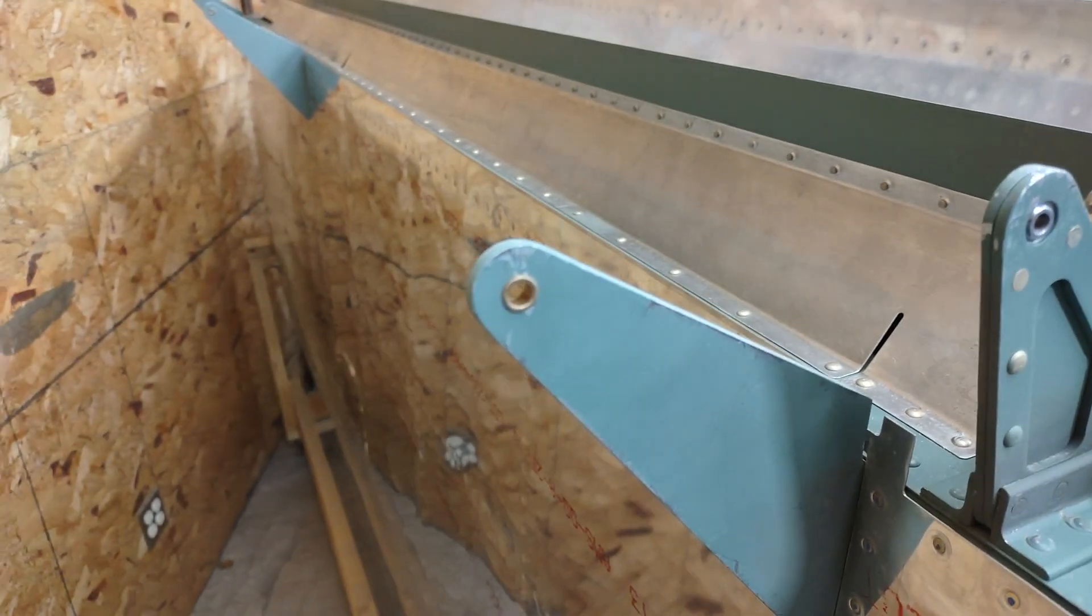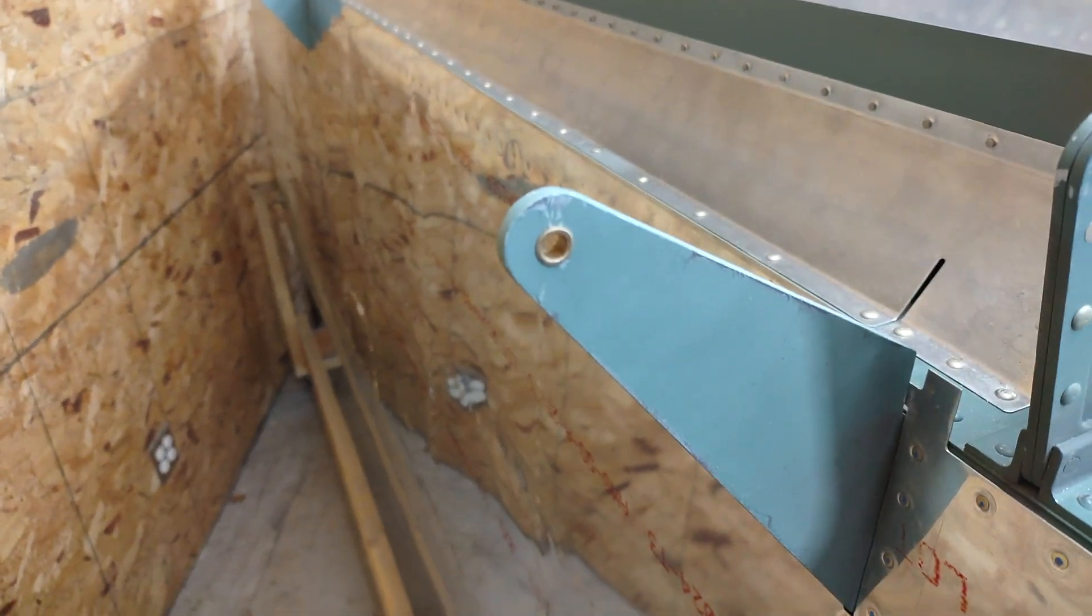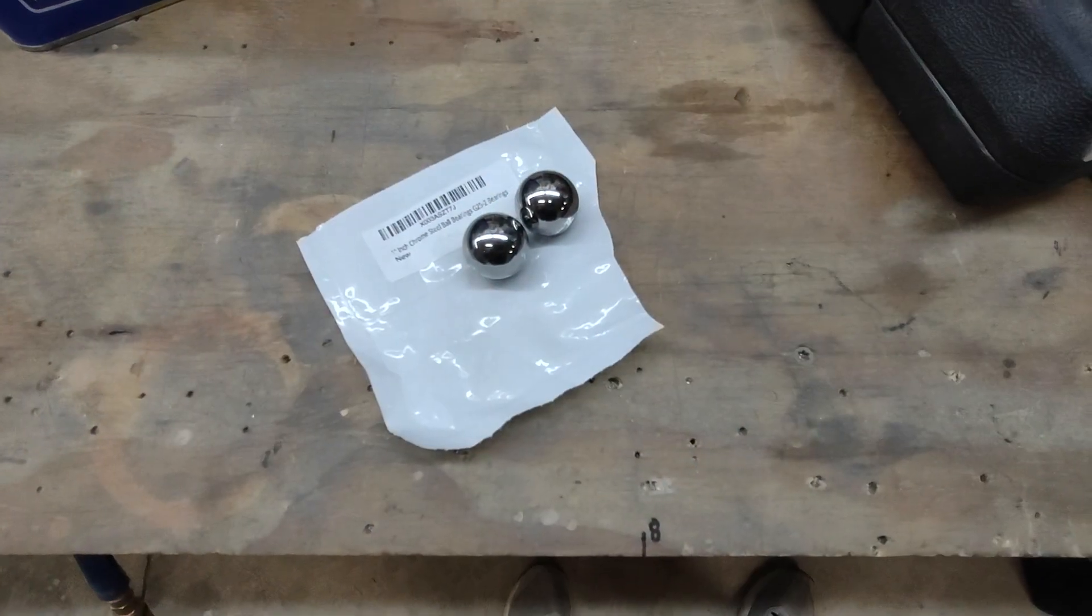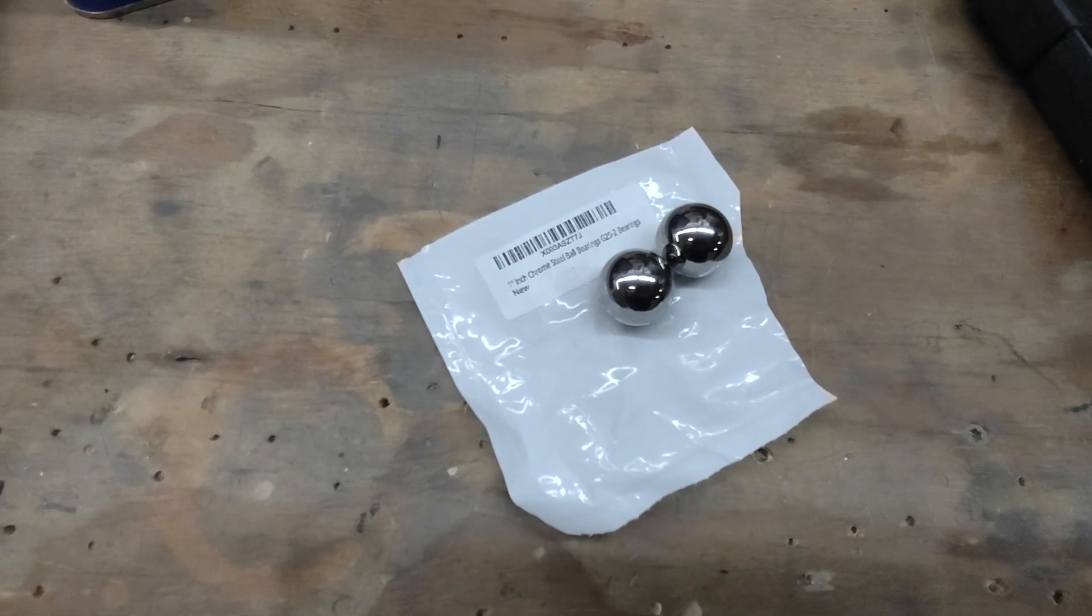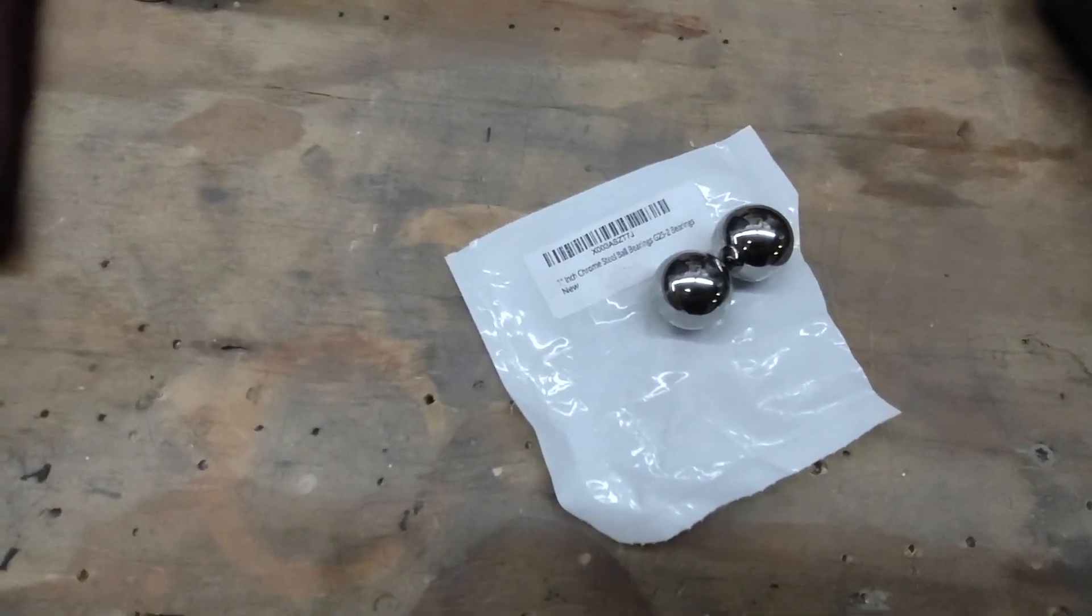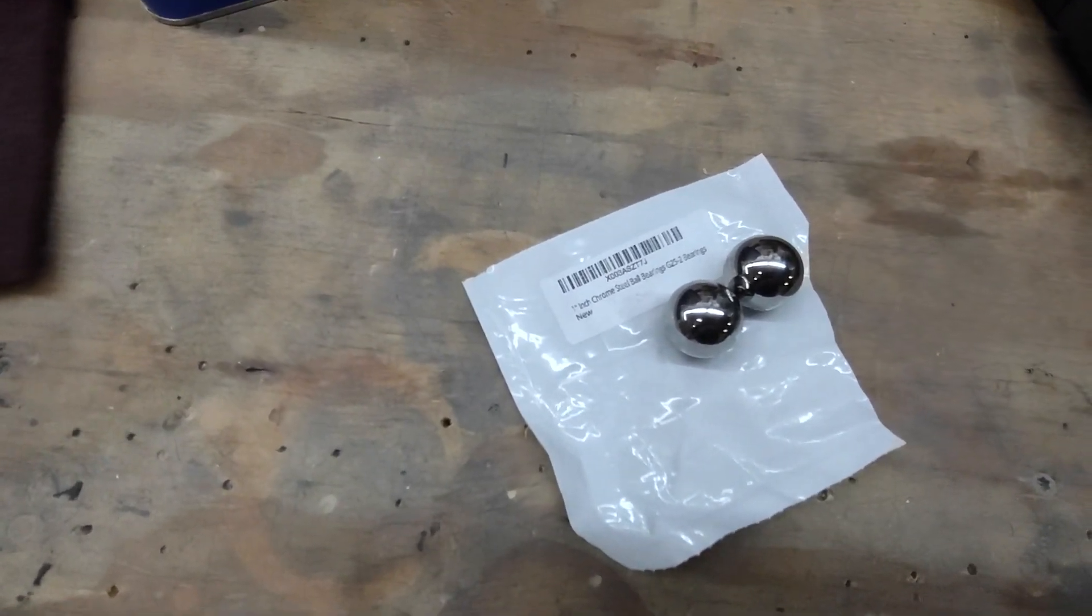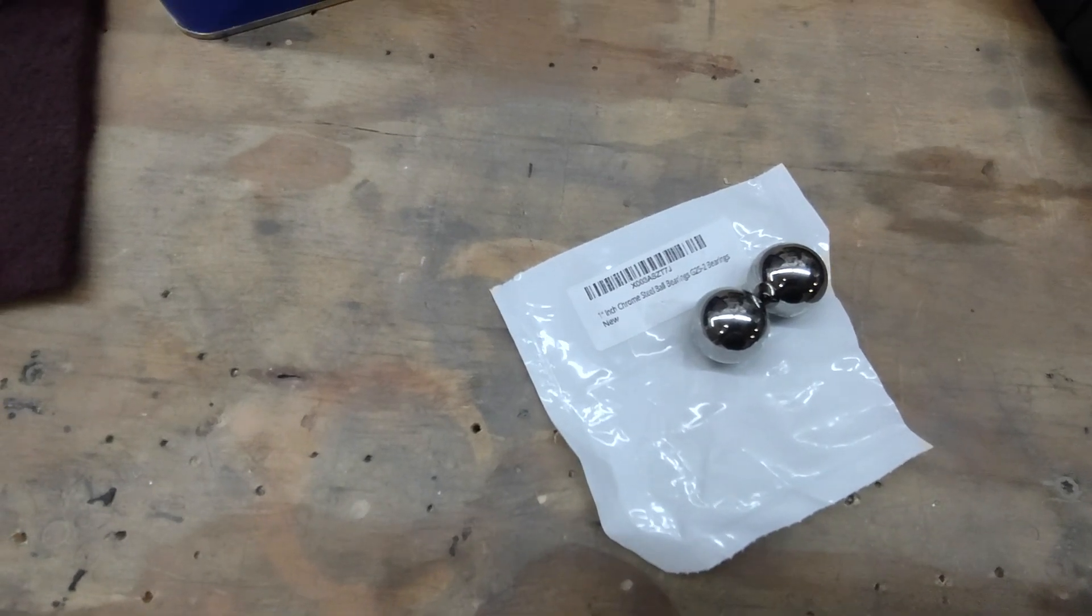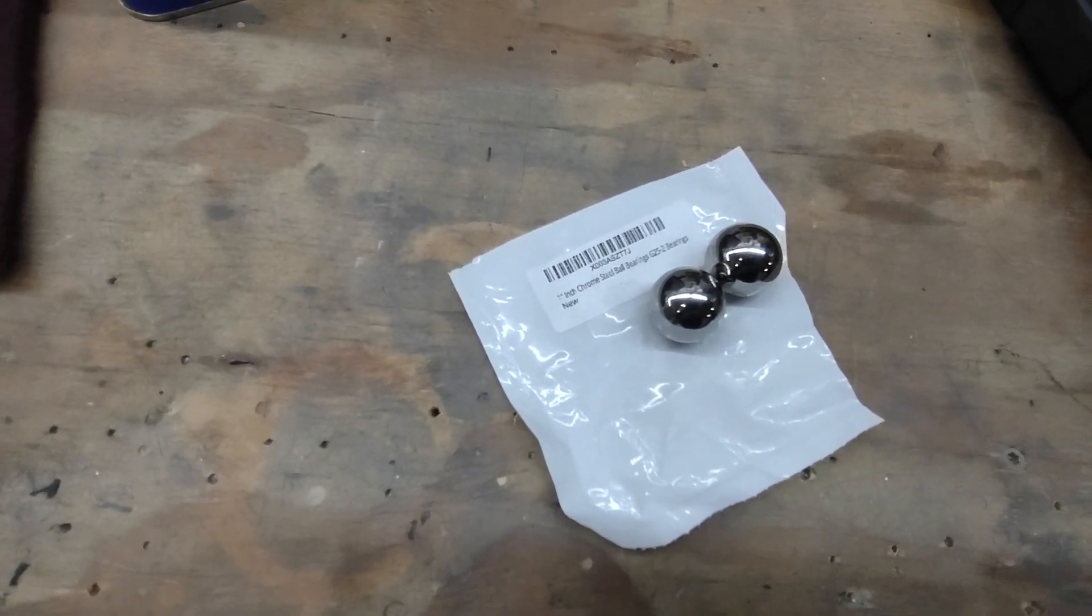So here's a quick tip on how to fix that without ordering a new bracket. First of all, you will need two of these one-inch chrome steel ball bearings. I got these off of Amazon for a couple bucks.